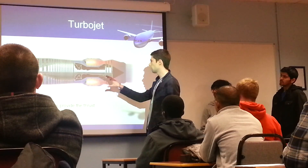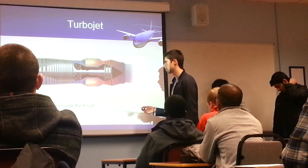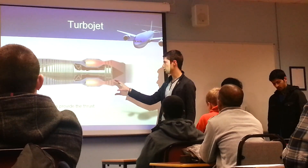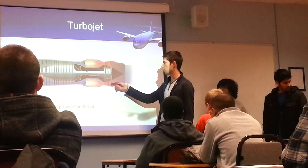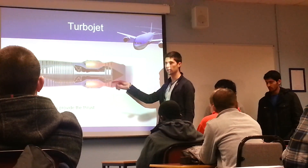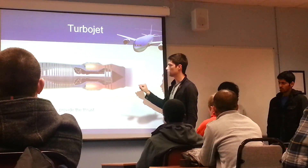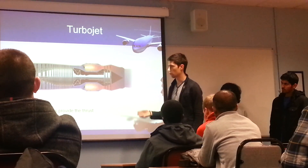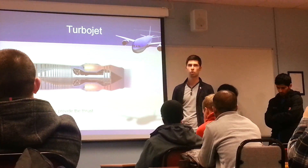Air then enters the combustion chamber where it is ignited. Because of the explosion, it expands and is used to provide energy which spins the turbine. The exhaust exits at very high speed, providing thrust. The turbojet engine is mostly used in military aircraft.